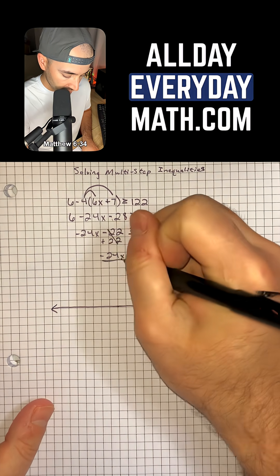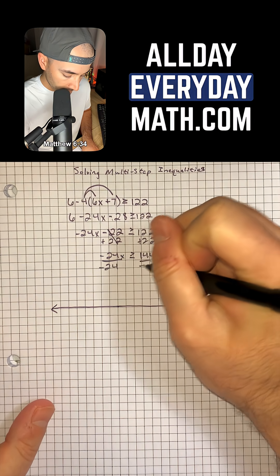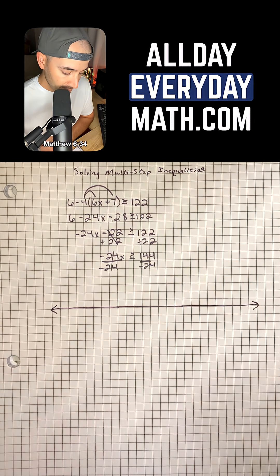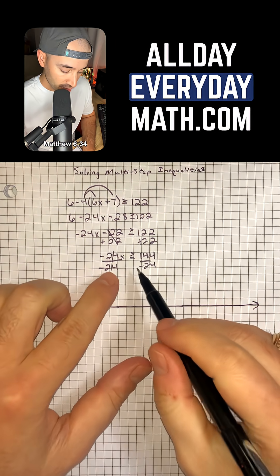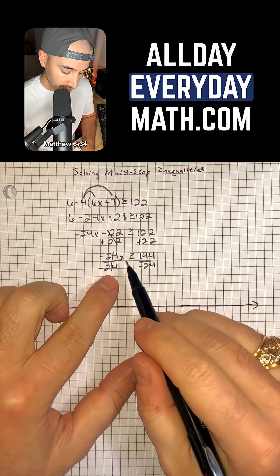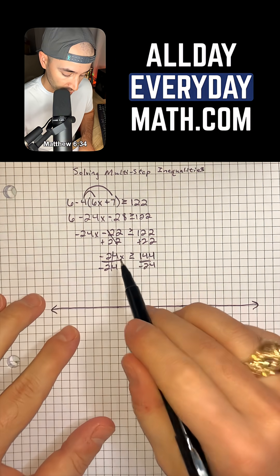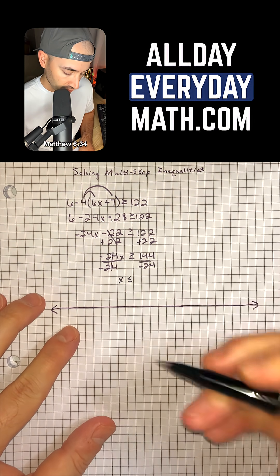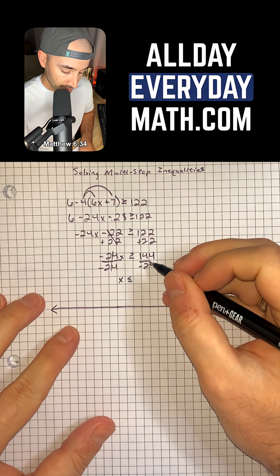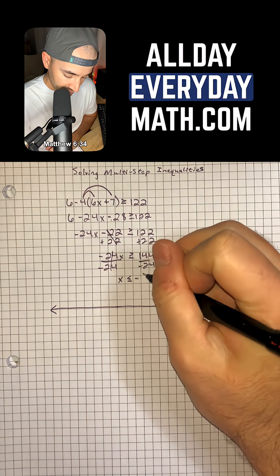And so now we have to divide by negative 24. Now, whenever we divide by a negative number or multiply by a negative number and we're trying to solve an inequality, that is going to flip our inequality sign. So now we will have x is less than or equal to 144 divided by negative 24 is negative 6.